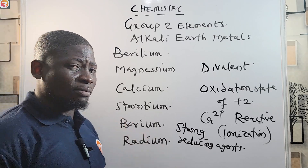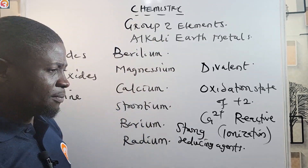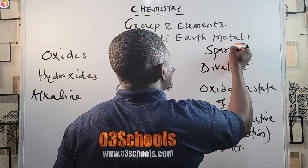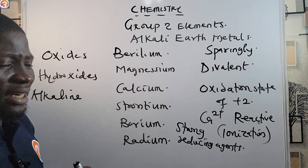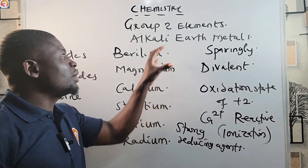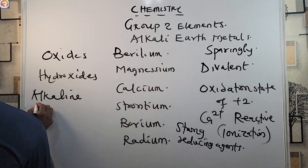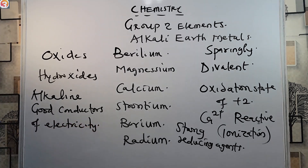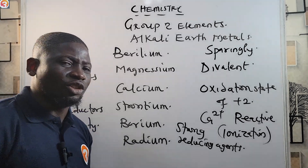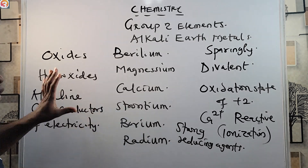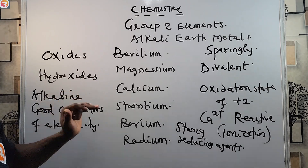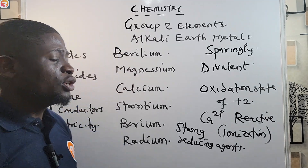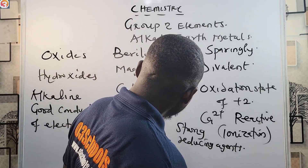We've previously discussed uses of magnesium hydroxide and calcium hydroxide. These elements form oxides and hydroxides. Note that magnesium oxide (MgO) is sparingly soluble — or sometimes said to be insoluble — in water. Group two elements are also good conductors of electricity, just like group one elements.